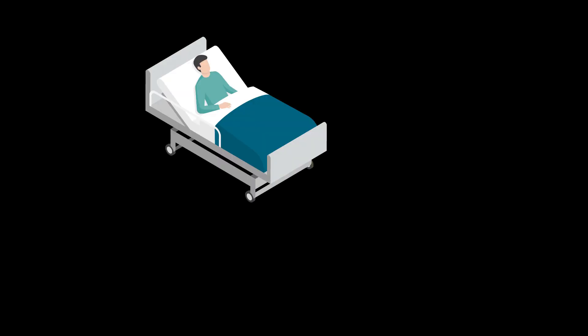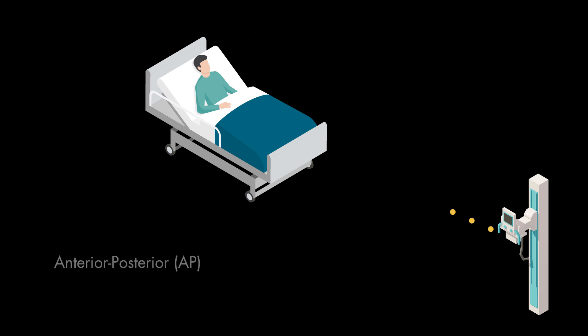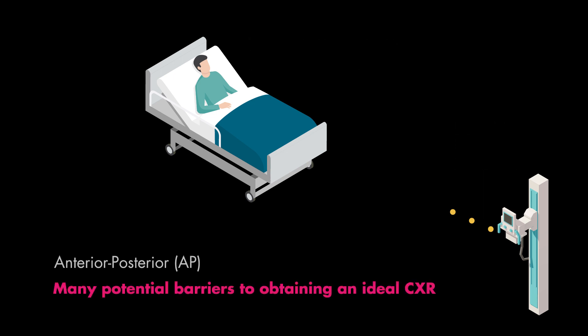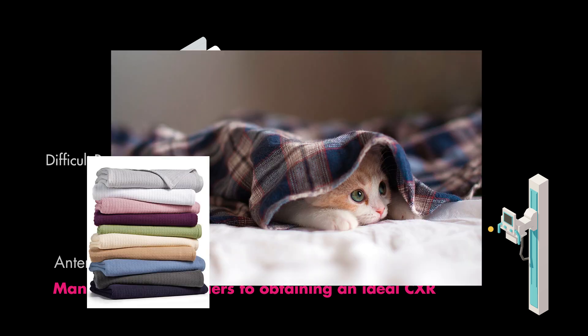To illustrate why this is important, take for example a very sick patient in the ICU. These patients don't have the ability to walk or stand, so they stay in bed and a portable machine is brought to them. The x-ray detector is slipped behind their back and the x-ray machine is placed in front. Often, these anterior-posterior films are inferior in quality to the posterior-anterior view because patients who are bedbound are limited in their space and mobility. There are usually things in the way such as central lines, IV poles, monitors, blankets, etc.